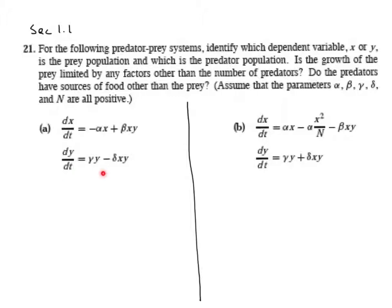As you look at this system to decide which one is the predator, sorry, which one is the prey, you want to see which one is growing. So, I quickly see that here there's a positive term, and this is gamma times y.